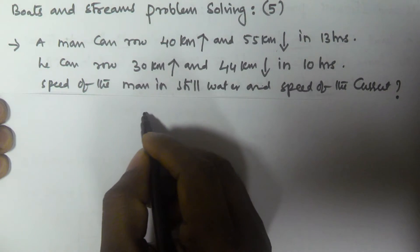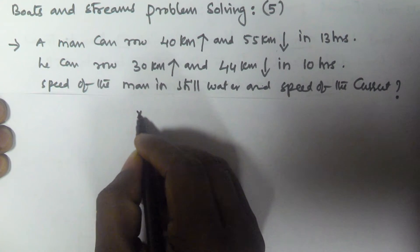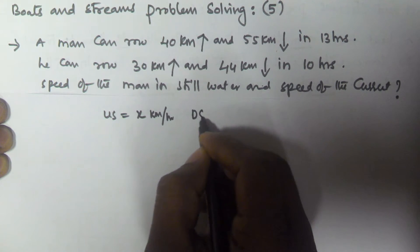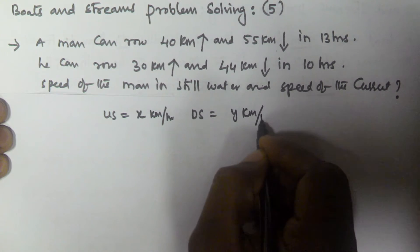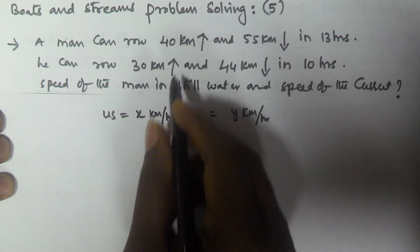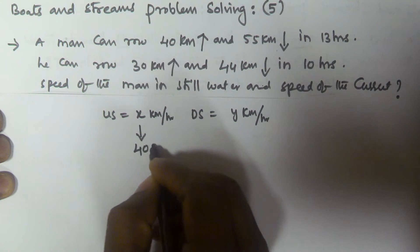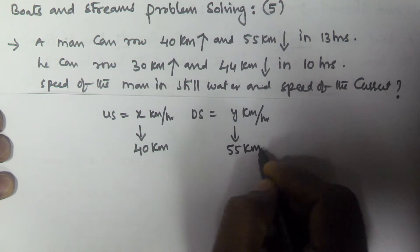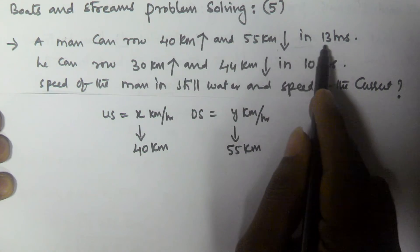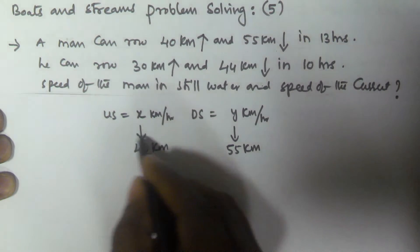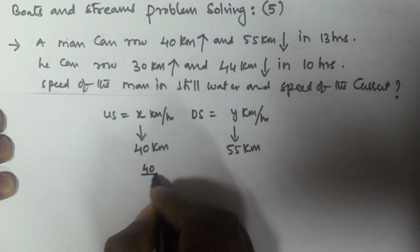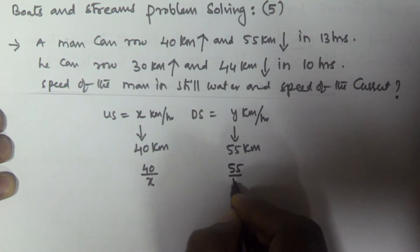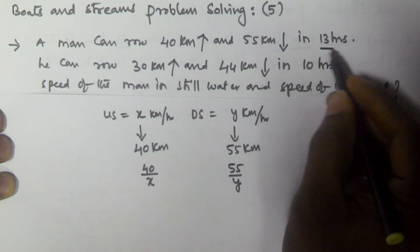Let us assume the upstream speed is x kilometers per hour and the downstream speed is y kilometers per hour. In the first case, he traveled 40 kilometers upstream and 55 kilometers downstream, and finished both travels in 13 hours. The time taken upstream is 40/x and the time taken downstream is 55/y.